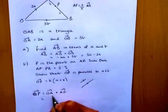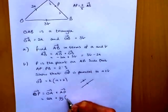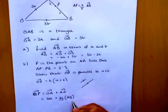And we've got both of those. So O to A is 2A and A to P is going to be 2 fifths of AB. OK, 2 fifths of AB.